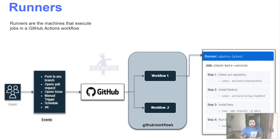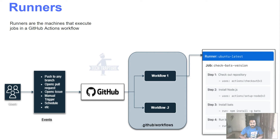All GitHub jobs will execute on runners. As an example with Jenkins - you always host Jenkins and create executors, either on the same machine or different machines, and those executors are used for Jenkins jobs to execute. Similarly, GitHub Actions is built into GitHub, but we still need runners to execute GitHub Action workflows and jobs.